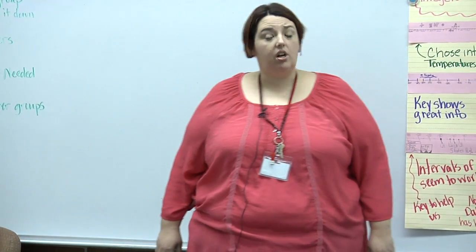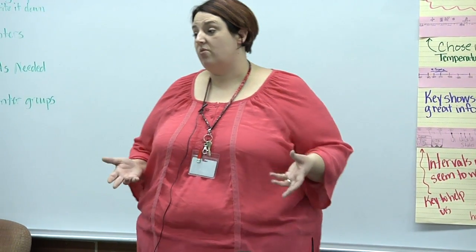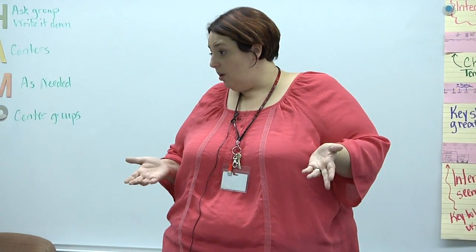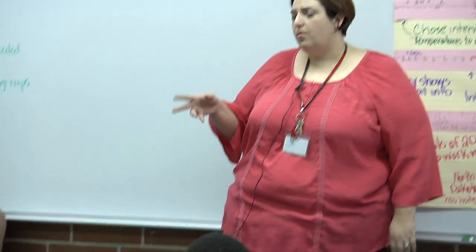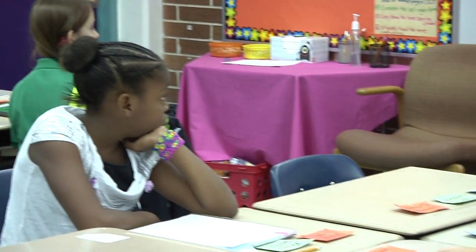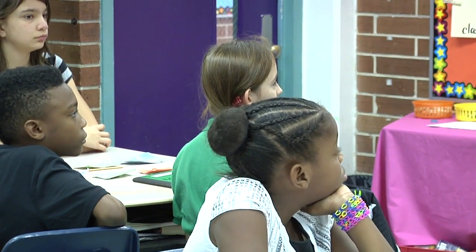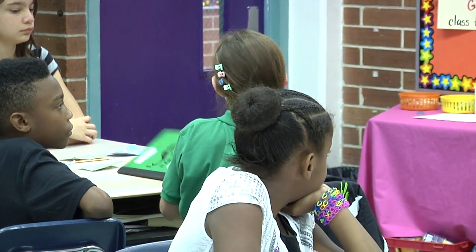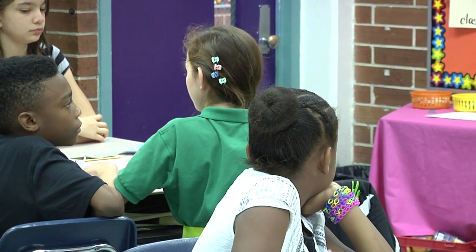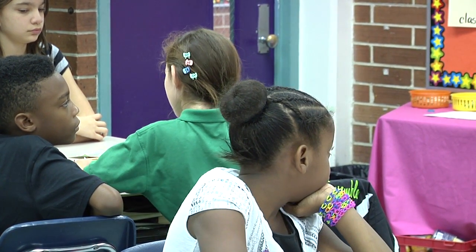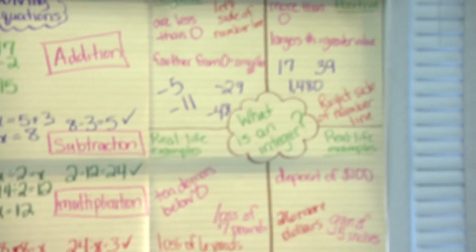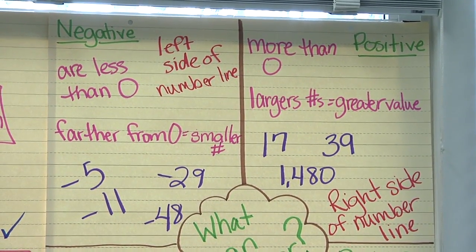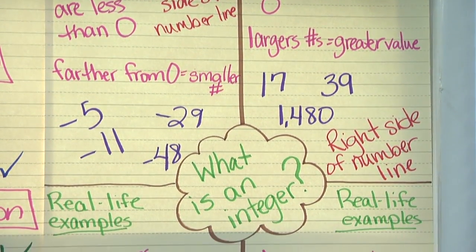Group four, you guys are working on real world integers. We had just done that right before CGAs, but we did struggle with that standard a little bit, so we're going to give ourselves a little more practice. Elizabeth, if we are stuck on an integer and can't figure out if it's a negative or a positive, what can we use to help us? We can use our interactive journals — we actually did make a foldable with a number line — and we can also use our chart back there, where under negative and positive we have notes, and under both we have real life examples.